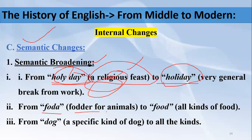Another example of semantic broadening: the word 'foda' was used specifically for fodder for animals — green grass and things animals eat. But nowadays we have 'food', which refers to any kind of food — for animals, for humans, for any creature, even 'food for thought'. The meaning of 'food' was broadened. Similarly, the word 'dog' initially referred to a particular specific kind of dog, but nowadays 'dog' refers to any kind of dog. This is semantic broadening.